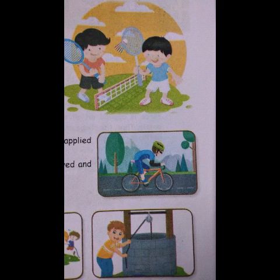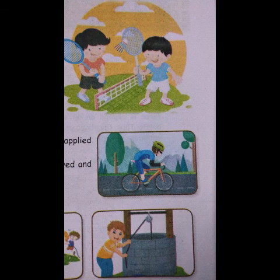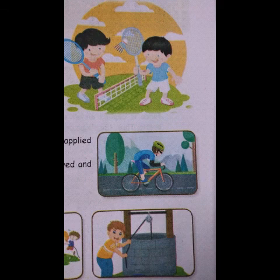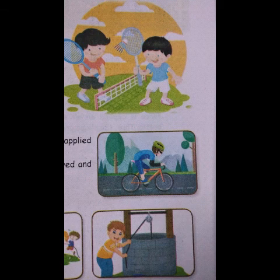Next, we are going to learn about force changing speed. See the second picture — a boy is riding a cycle. When the boy applies force by pushing the pedal, the cycle starts moving. When he pedals very fast and applies more force, the speed will be more. But when he applies the brake or stops pedaling, the cycle will stop. This is the example for how force can change the speed.